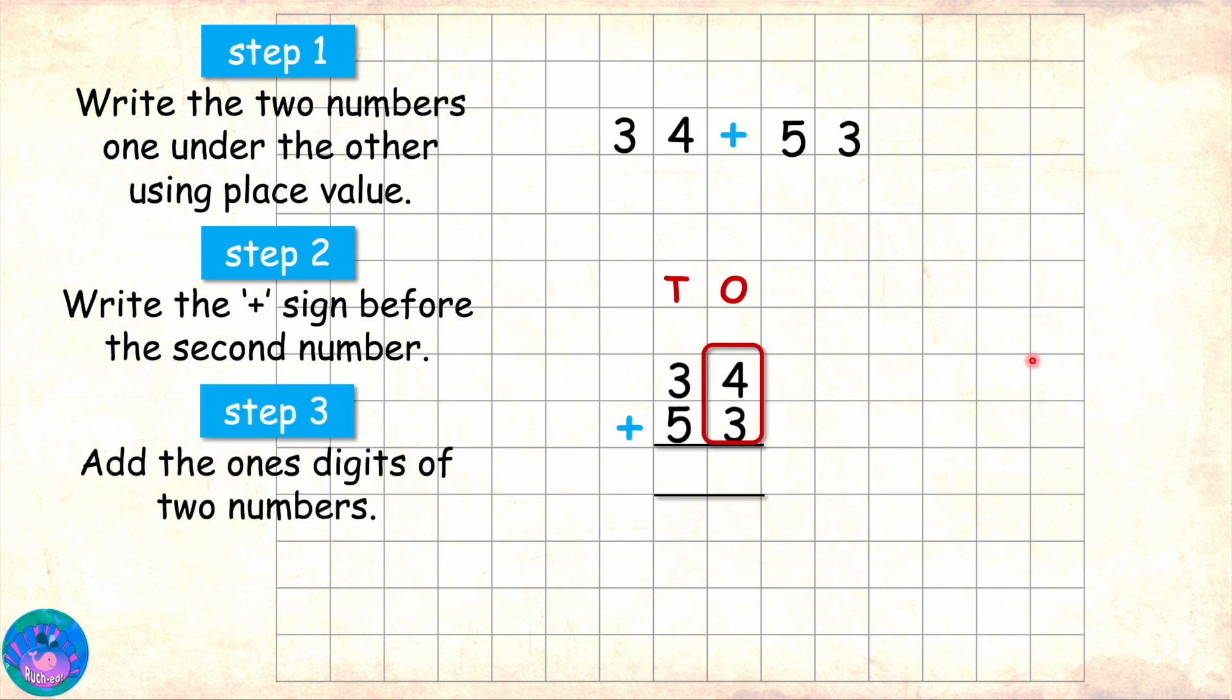Step 3 will be to add the ones digits of the two numbers. The two ones digits are 4 and 3. Now you can add 4 and 3 using any technique you have learnt. Oh, I will use my mind and fingers. So 4 in mind, 3 fingers out, start counting after 4: 5, 6, 7. The answer is 7. Correct! And we will write 7 under the ones digits we have just added.